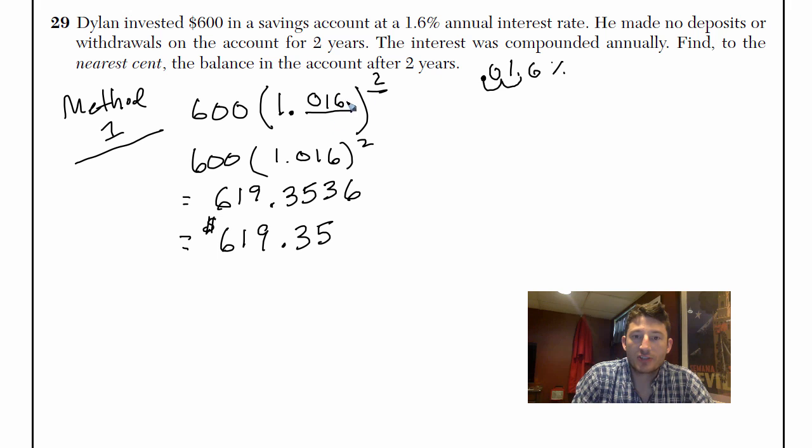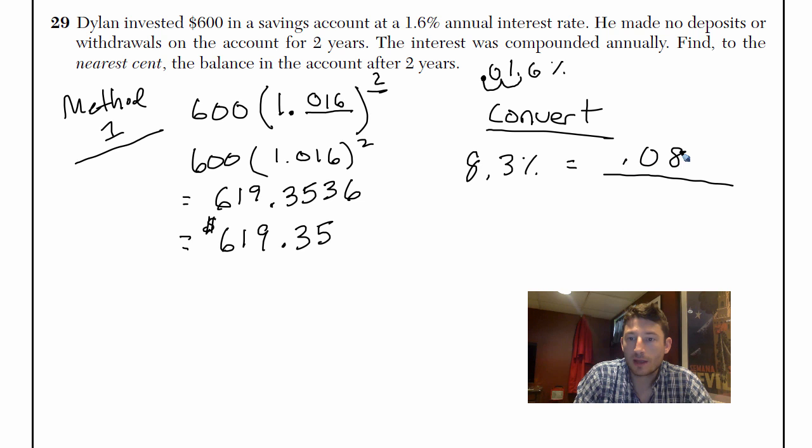So again, your interest rate without the percent, you have to convert it. That's the main thing. Don't forget to do that. So how are you guys at converting? If I told you the interest rate was 8.3%, would you be able to tell me what I'm putting over here? That's 0.083.